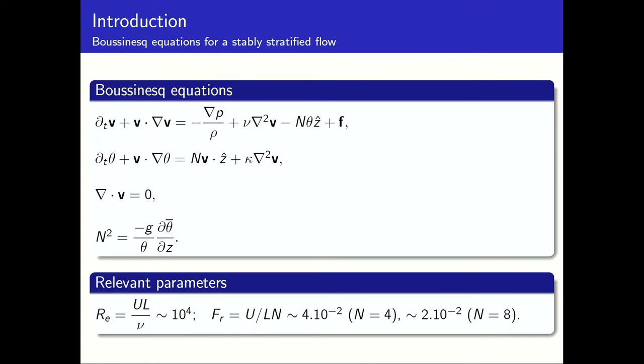What I'm going to present are models for the parallel and perpendicular dispersion of single Lagrangian particles under the Boussinesq incompressible approximation. If we linearize the Boussinesq equations in the parallel direction, the solutions are waves that oscillate in the parallel direction, and the frequency of these waves is the Brunt-Väisälä frequency, which is a measure of how steep the density background profile is.